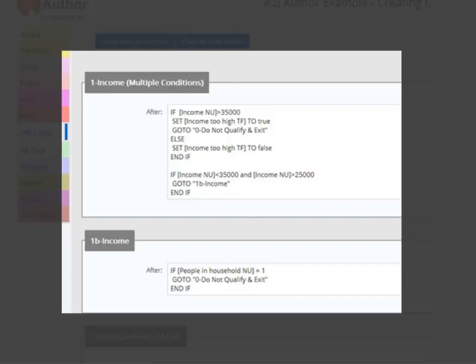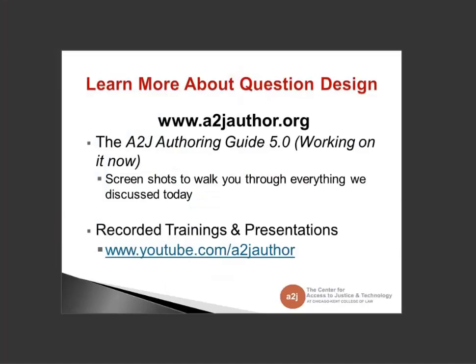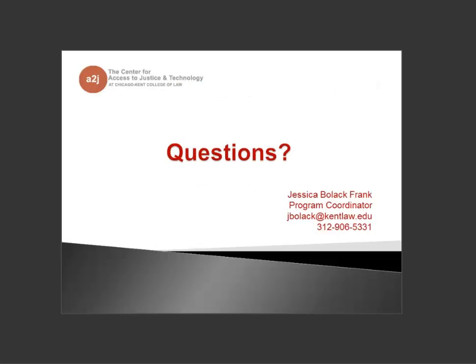Our A2J Author 5.0 authoring guide is a work in progress at 300 pages — we are updating screenshots and walking through everything discussed today. It will be posted to A2JAuthor.org when available. We also have recorded trainings and presentations on our YouTube channel, which will be updated as we go. If you have questions, feel free to raise your hand or put them in the question box. For future questions, email jbolak@kentlaw.edu or call the number shown.